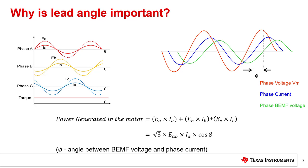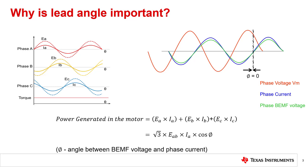The generated power and torque will be maximum when the phase current and back EMF are aligned. When phase current and back EMF are aligned, angle phi is zero. When phi is zero, maximum power is generated in the motor as cosine of phi is one. To achieve maximum efficiency, lead angle should be adjusted such that the angle between back EMF voltage and phase current is zero.